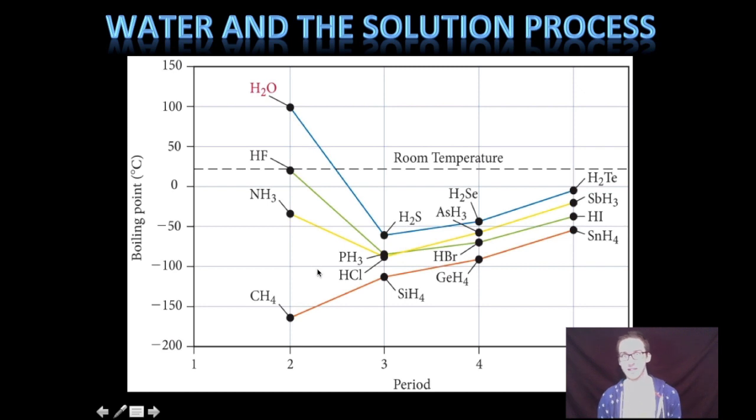Notice that we see this exception as well with both HF and NH3, other molecules in which we observe hydrogen bonding. Notice that we don't see that exception occur here with the group 4 elements because carbon is not electronegative enough to really pull the electrons away from the hydrogen atom to allow for that hydrogen bonding to occur between molecules.